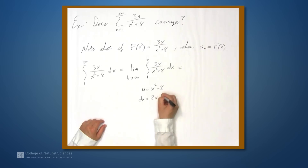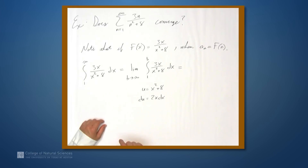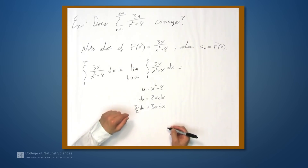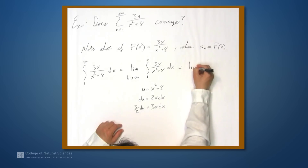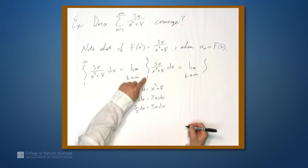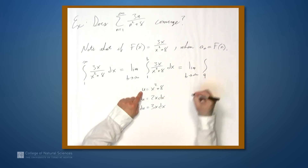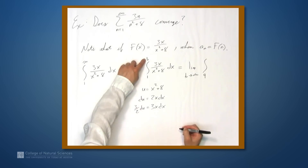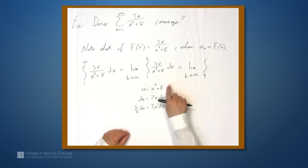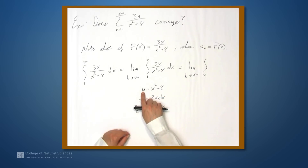Then du equals 2x dx. What we really want to substitute for is 3x dx, so let's multiply everything by 3 halves, giving us 3 halves du equals 3x dx. We also have to change the limits of integration. When x equals 1, u equals 9. When x equals b, u equals b squared plus 8, and as x goes to infinity, so does u, so the upper limit still goes to infinity and we can leave it as b.